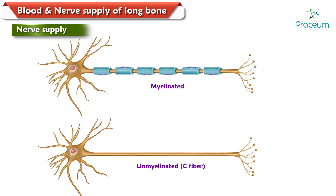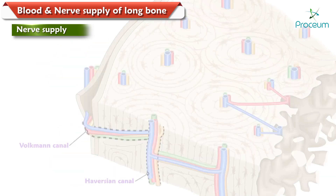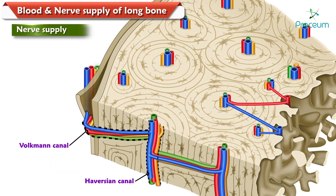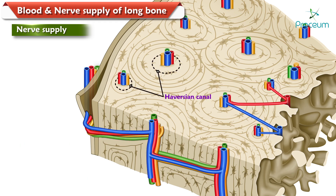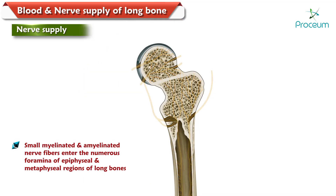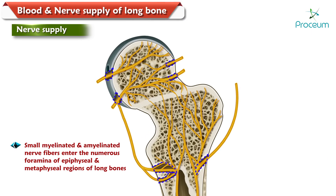Regarding the nerve supply of a long bone: bone tissue is innervated by both myelinated and unmyelinated (or C fibers) sensory neurons. Volkman's canals are channels that assist with blood and nerve supply from the periosteum to the Haversian canal. A Haversian canal generally contains one or two capillaries and nerve fibers.